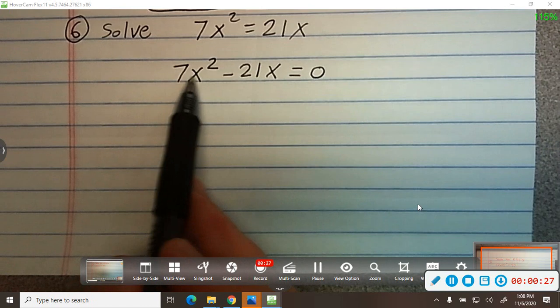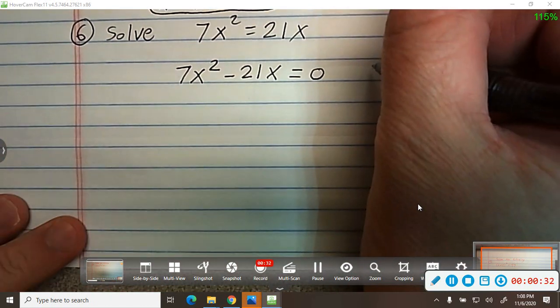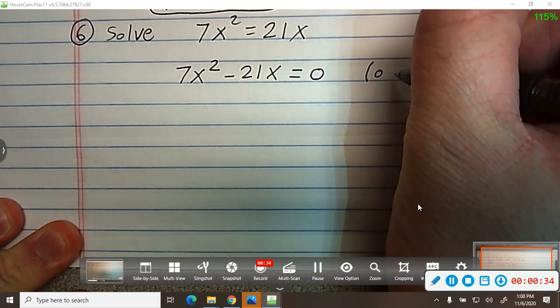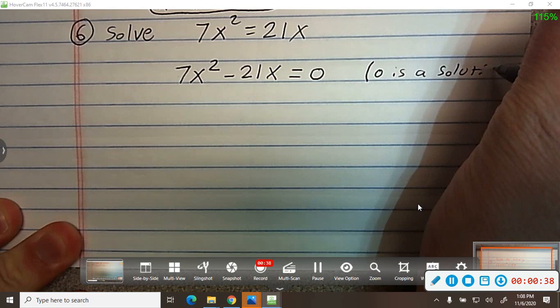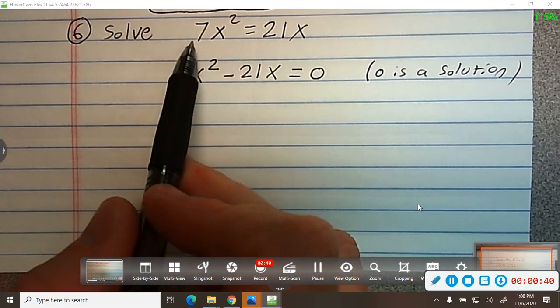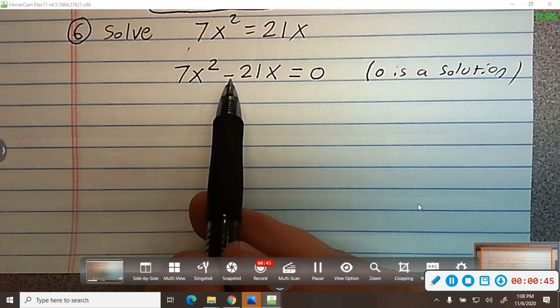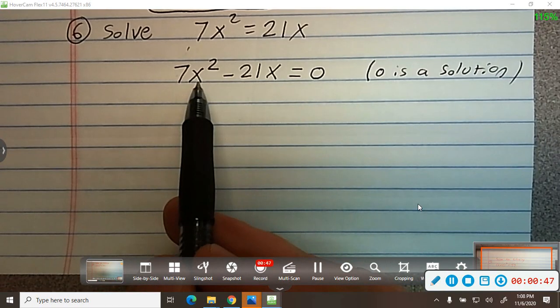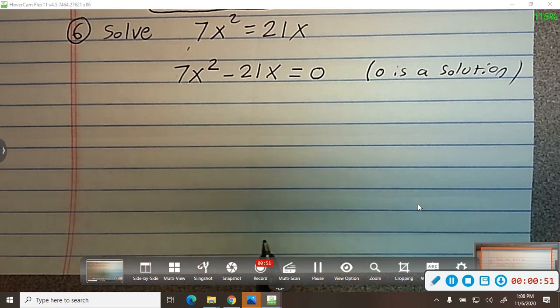Anytime they all have an x, you know that 0 is the solution. Why? Because 7 times 0 squared, 0 squared is 0, 7 times 0 is 0, 21 times 0 is 0, 0 minus 0 is 0. So anytime they all have an x, you know 0 is one of your solutions.